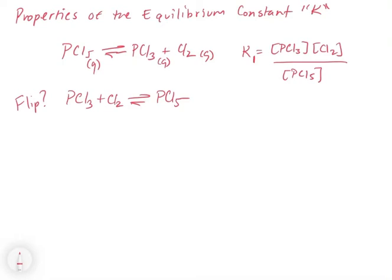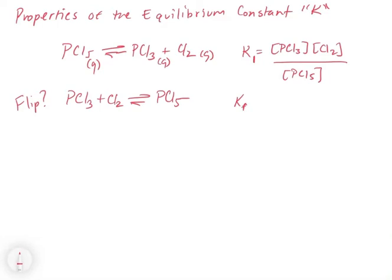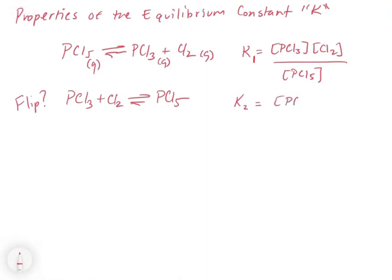Well if we write the K for this, so if we write little K, we'll call this one K2, where this represents the K for this other example. So in this case, it's PCL5 divided by PCL3 and CL2. And what you'll notice is that K2 is the inverse of K1, right?